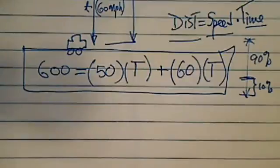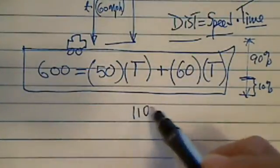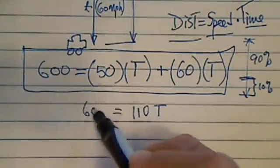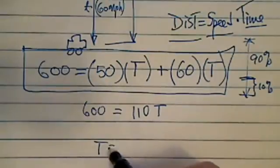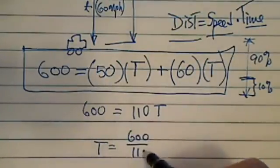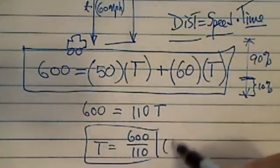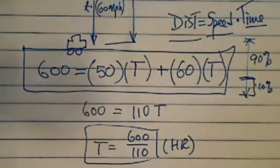Now here we're at 90%. I have 110t is equal to 600. Okay, and then t is equal to 600 divided by 110, number of hours. And there's your answer. Okay, have a confident day.